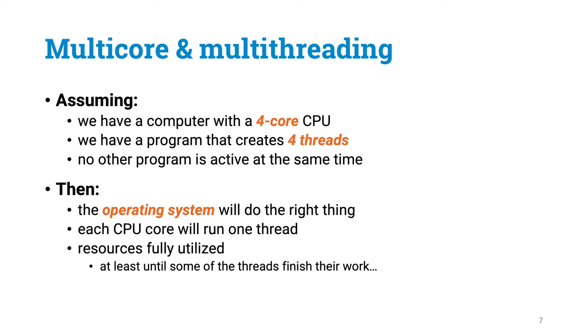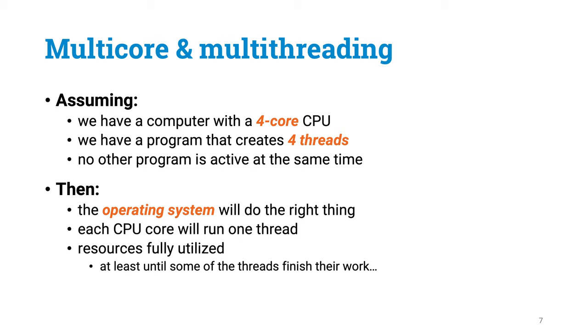Multi-core parallelism in CPUs is tightly connected to multi-threading in operating systems. A programmer simply creates multiple threads of execution, then the operating system tells each CPU core to run its own thread. You can pretty safely assume that the operating system is doing the right thing: if you are running a program that creates four threads on a CPU that has four cores, and there is nothing else happening in the computer at the moment, then there will be a one-to-one correspondence between threads and CPU cores.